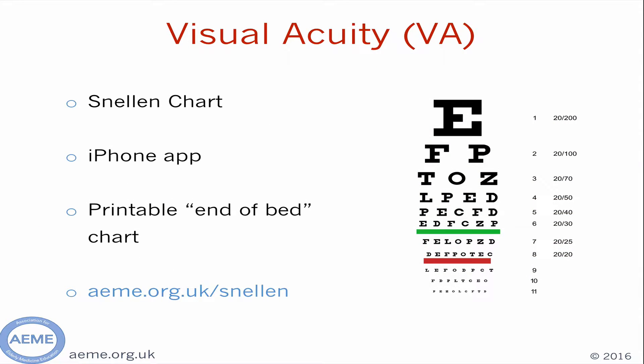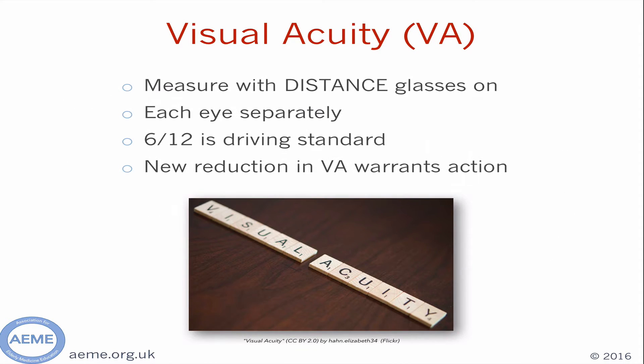So how do we actually measure vision in our patients? It can be particularly difficult in the elderly, in patients who have cognitive impairment or are less able to cooperate. But if you are able to get a visual acuity, the best way to do it is with a Snellen chart. Printable versions are downloadable from the internet and also available on many iPhone apps for free. Make sure the patient has their distance glasses on and that they are clean, and measure each eye separately. As a rough guide, 6/12 is the driving standard, and a reduction in previously recorded vision warrants further investigation.